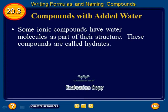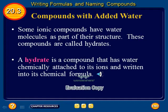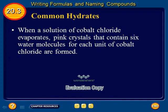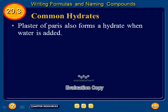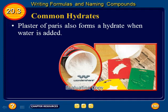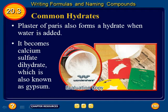Some ionic compounds have water molecules as part of their structure. These compounds are called hydrates. A hydrate is a compound that has water chemically attached to its ions and written into its chemical formula. When a solution of cobalt chloride evaporates, pink crystals that contain 6 water molecules for each unit of cobalt chloride are formed. The formula for this compound is CoCl₂. Plaster of Paris also forms a hydrate when water is added — it becomes calcium sulfate dihydrate, also known as gypsum.